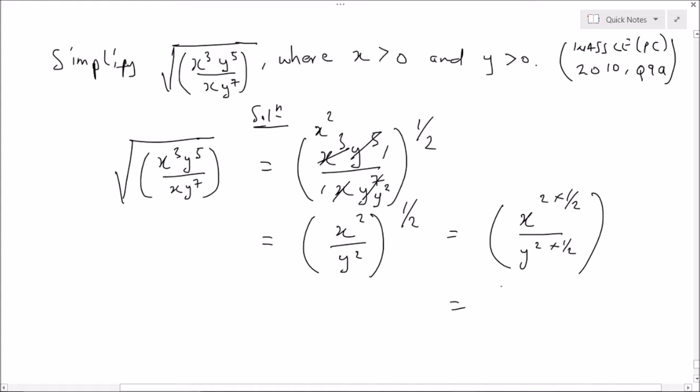So the 2 will cancel the 2 here, the 2 will cancel the 2 here. So we are left with only x, so we have x over y and this is our final answer.